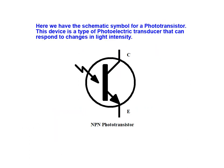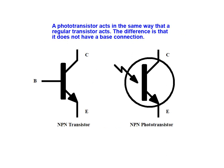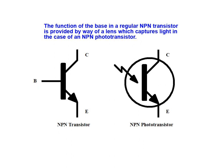Here we have the schematic symbol for a phototransistor. This device is a type of photoelectric transducer that can respond to changes in light intensity. A phototransistor acts in the same way that a regular transistor does. The major difference is that it does not have a base connection. The function of the base in a regular NPN transistor is provided by way of a lens which captures light, in the case of the NPN phototransistor.